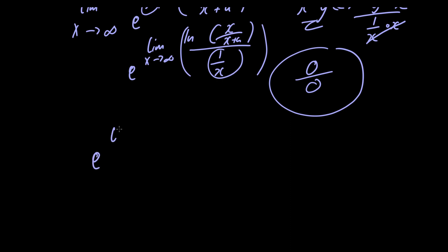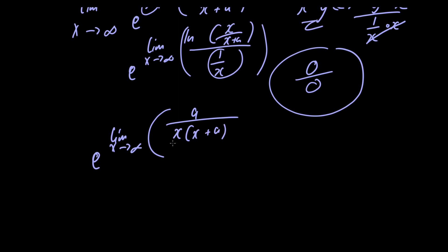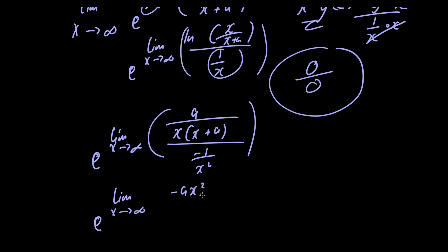Applying L'Hôpital's rule, we get e raised to the limit as x approaches infinity of a divided by x times x plus a, all divided by negative 1 over x squared.